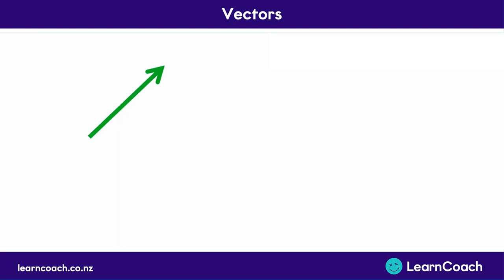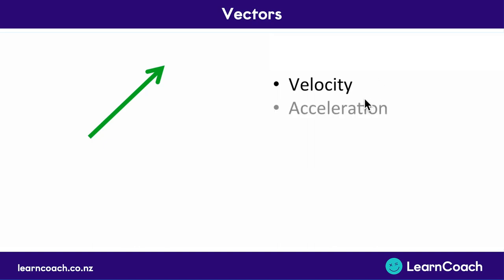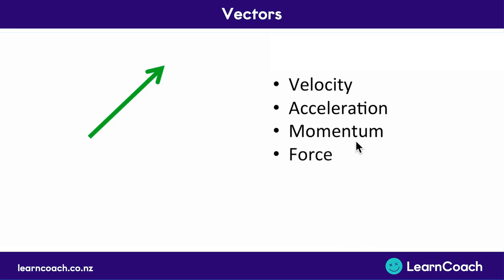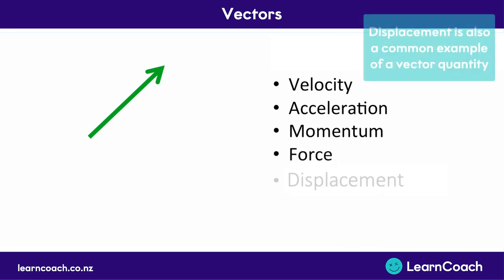In this video we're discussing vectors. Vectors are arrows which represent things. Some things we measure in physics actually have a direction. For example, velocity — we can speed up going north or going south, we have a direction. Same with acceleration, same with momentum, same with force. All of these things have direction and therefore they're called vectors.